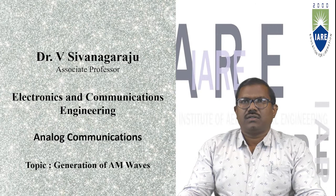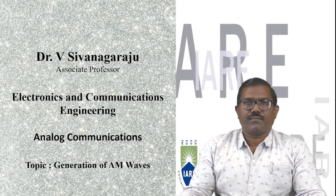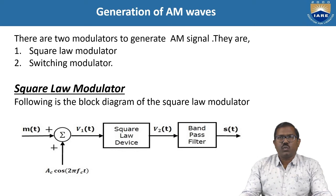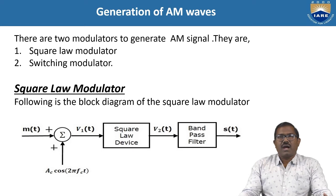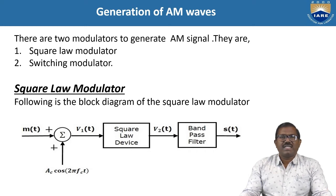Hello friends, today we are going to discuss generation of AM waves. In previous lectures, we discussed modulation, types of modulation, amplitude modulation in time domain and frequency domain description, single sideband frequency and power calculations of AM waves. Now, this is the time to discuss how to generate AM waves. We use two modulators to generate AM signals: the square law modulator and the switching modulator.